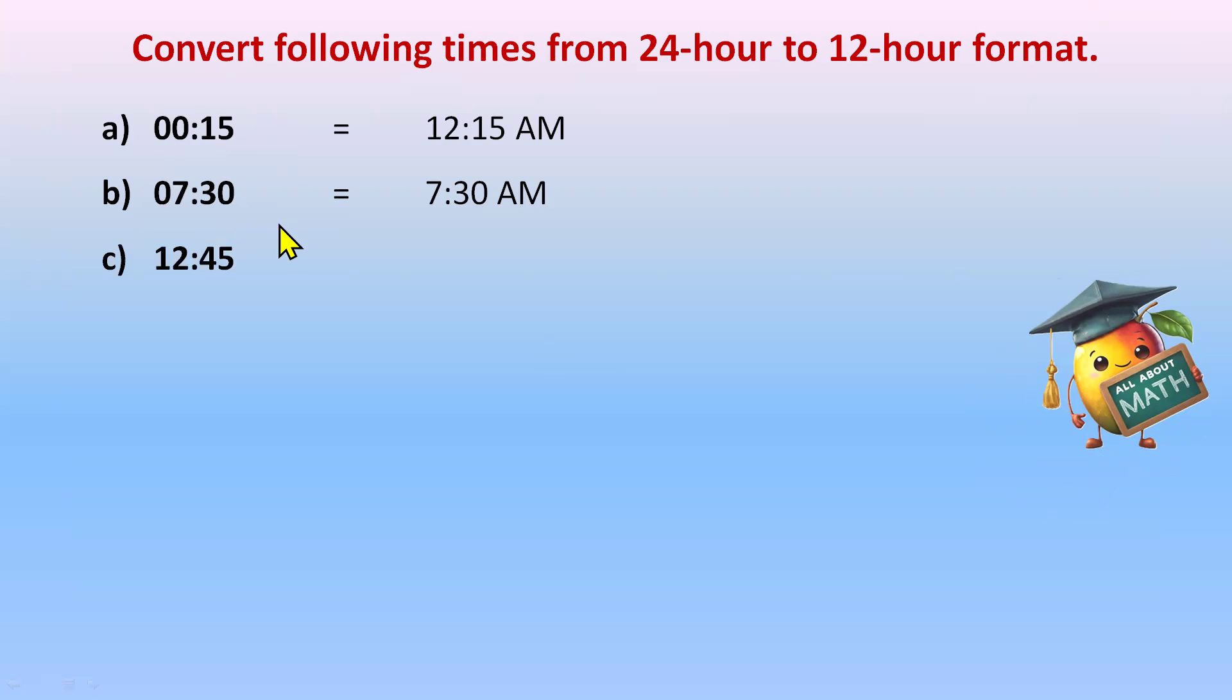Part C we have 12:45. So 12 is written as it is with P.M. Because 00 was A.M., so 12:45 P.M. Part D we have 15:00 is more than 12. So 15 minus 12 will give us 3 P.M. And we'll write P.M. after subtraction.